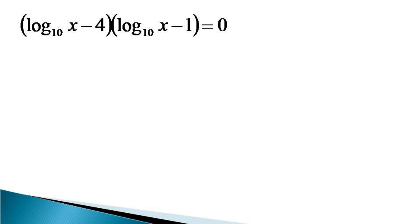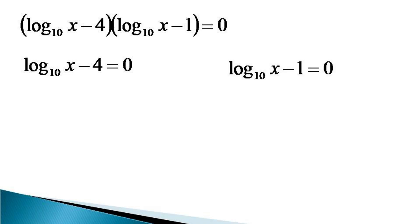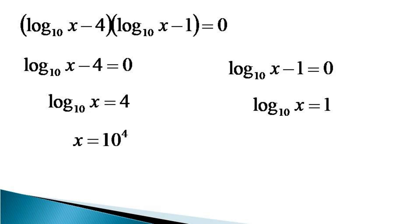From this equation, (log x minus 4) can be taken common to get (log x minus 4)(log x minus 1) is equal to 0. This gives two solutions. The first solution: log x minus 4 equals 0, giving log x equals 4, so x equals 10 to the power 4. The second solution: log x minus 1 equals 0, giving log x equals 1.